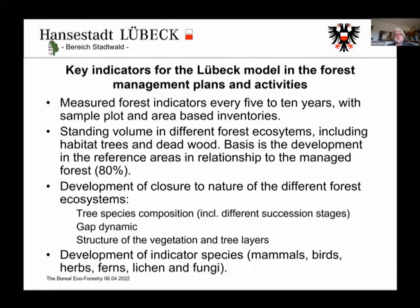We measure forest indicators every five or ten years using sample plot or area-based inventories. The indicators include standing volume in different forest ecosystems including habitat trees and deadwood, with reference areas as a baseline at 80% development. We also look at tree species composition including different succession stages, gap dynamics, vegetation and tree layer structure, and we have developed indicator species inventories for mammals, birds, herbs, ferns, lichens, and fungi.